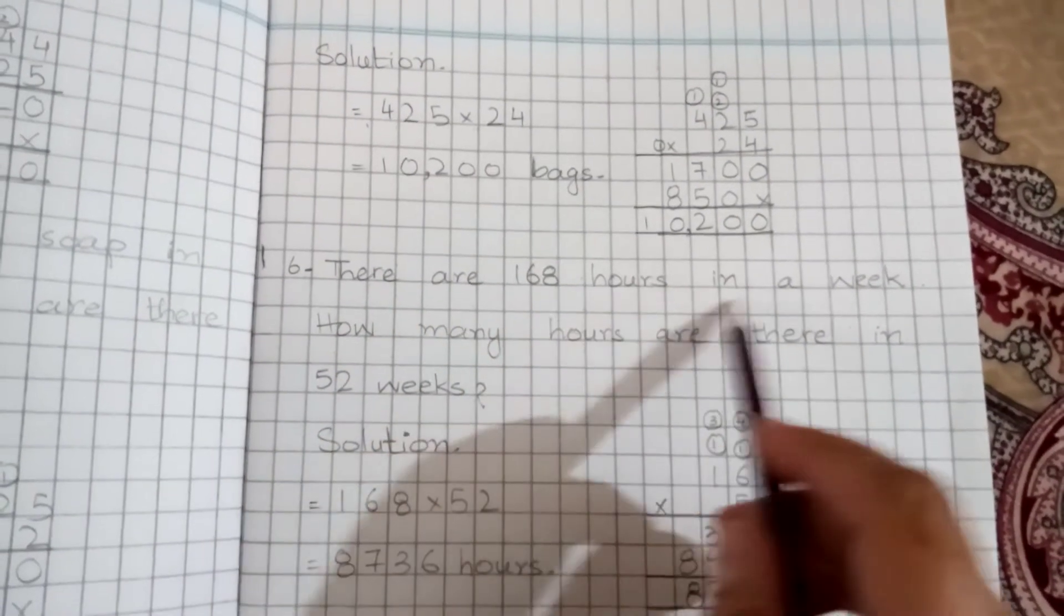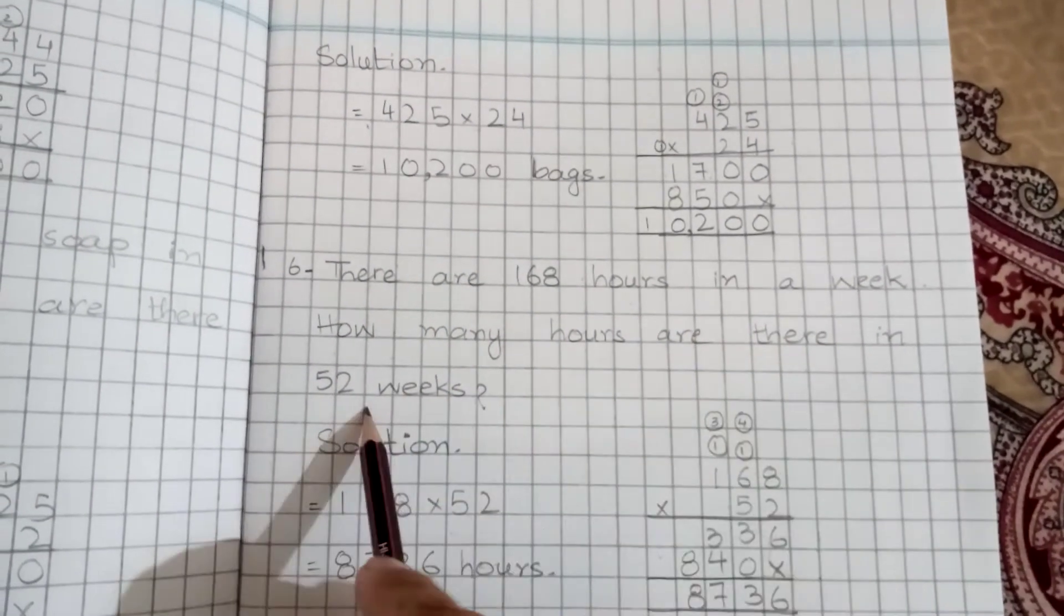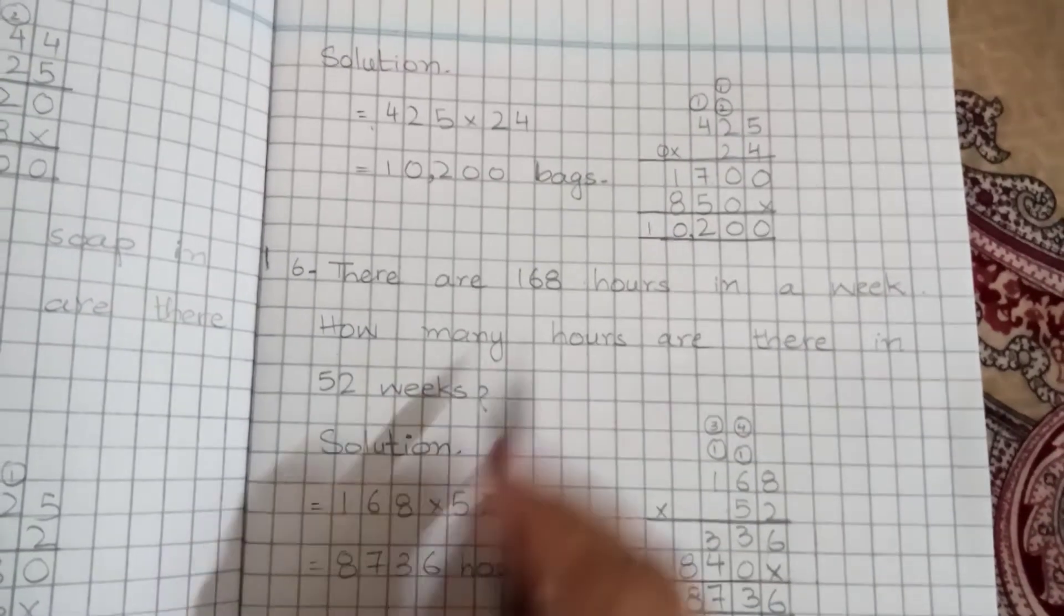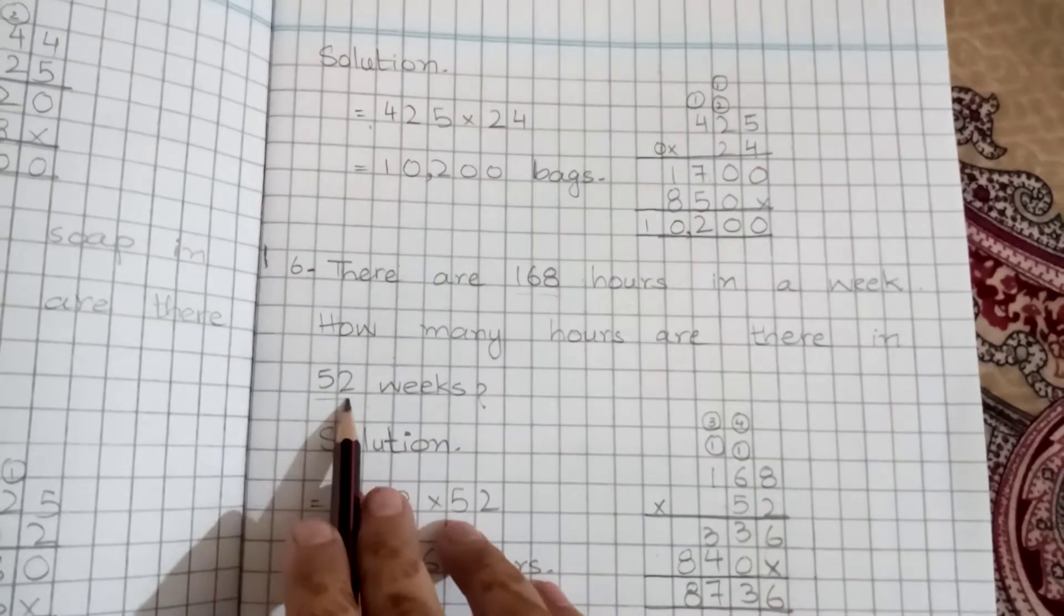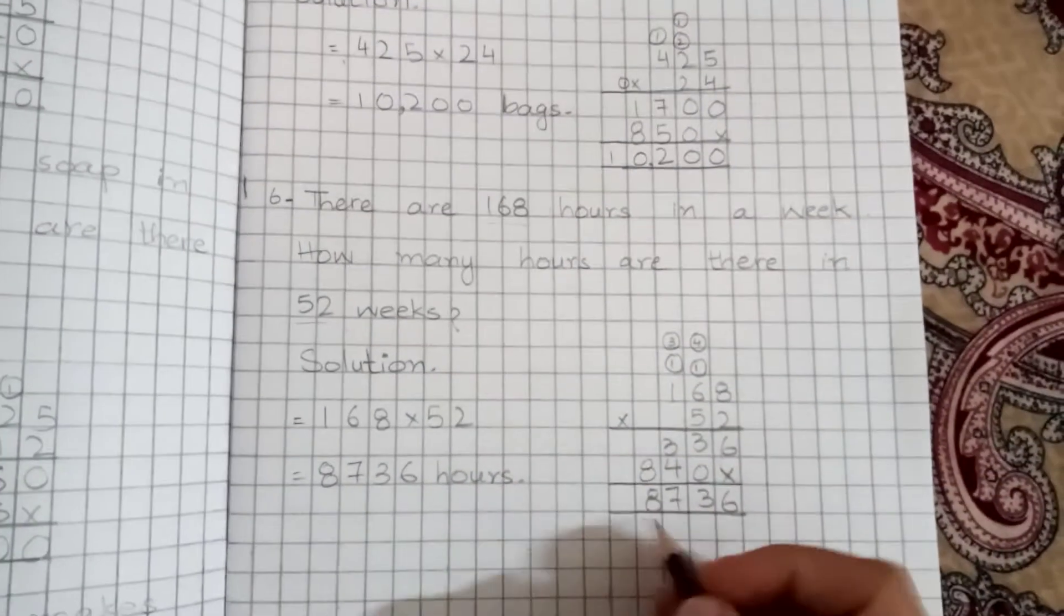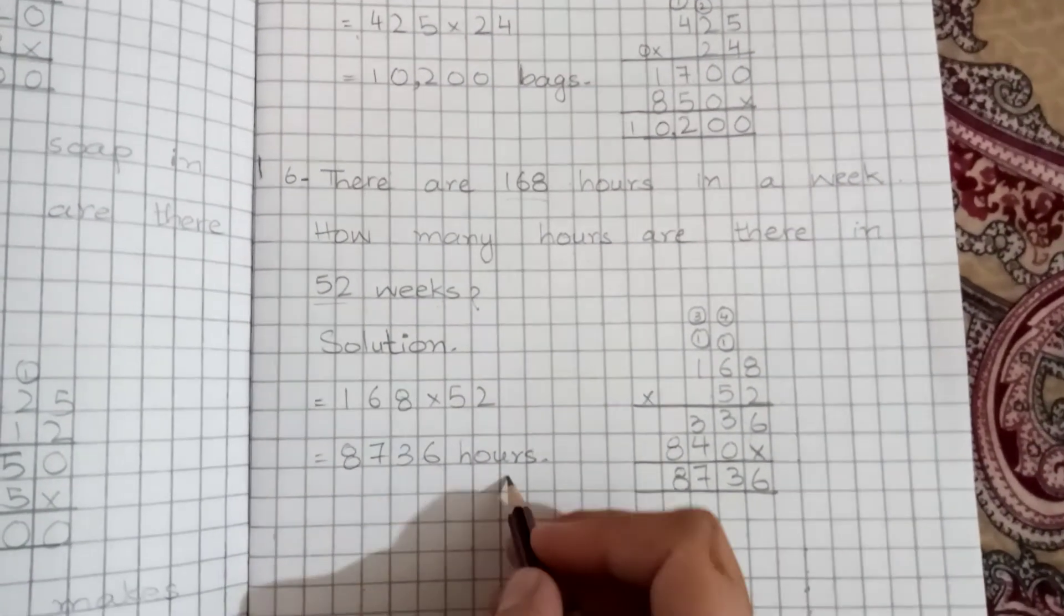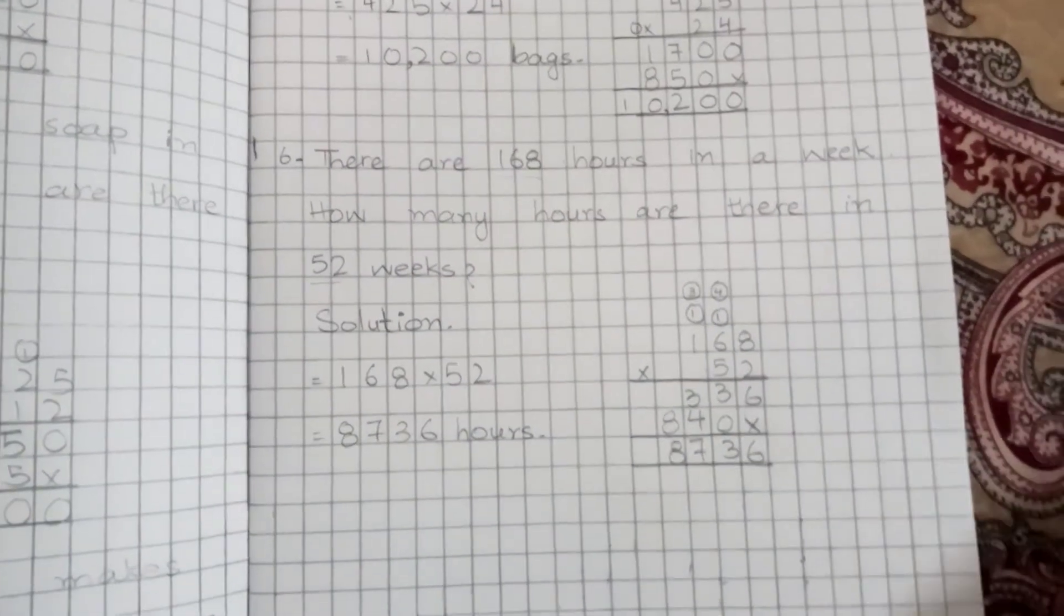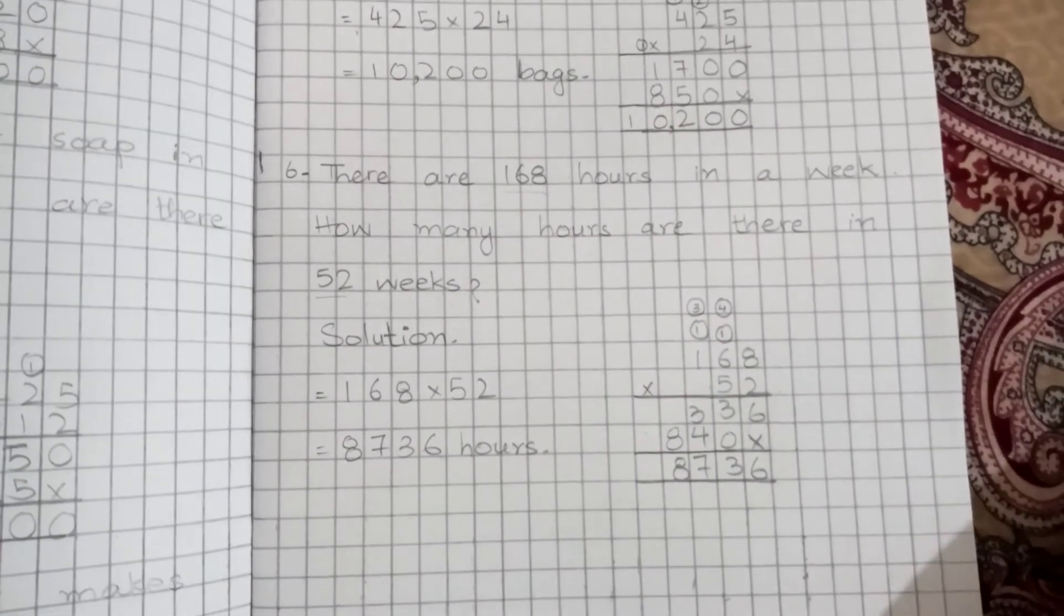There are 168 hours in a week. How many hours are there in 52 weeks? Multiply 168 by 52 and the answer is 8,736 hours total. Okay, multiplication I have taught you in the book, you have done double multiplication.